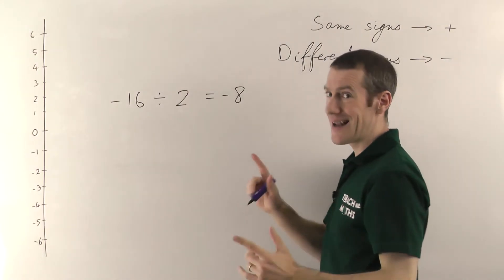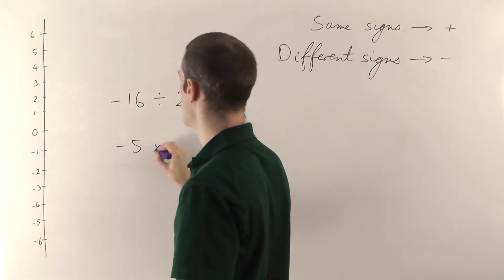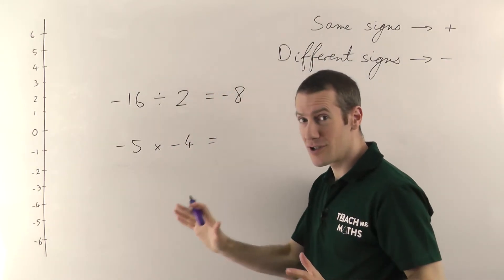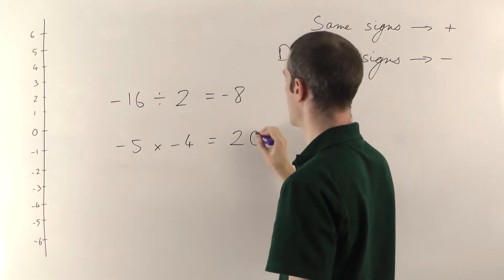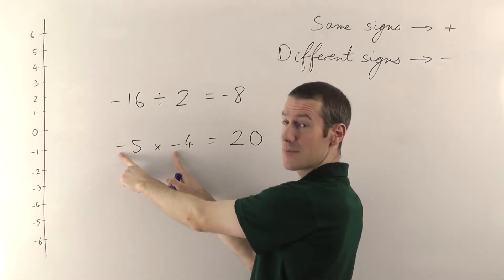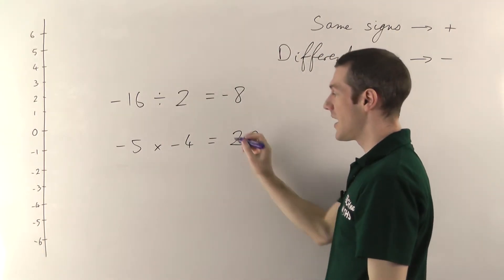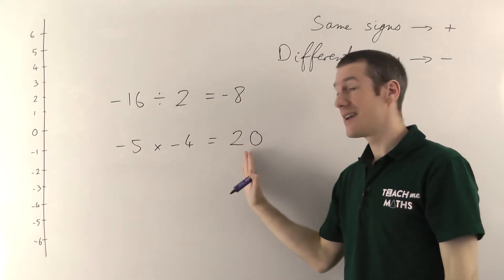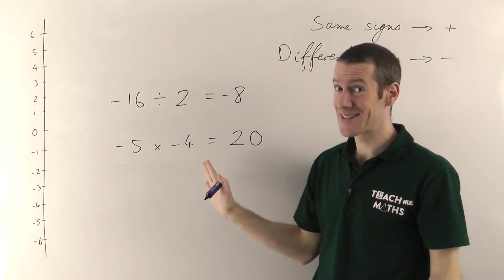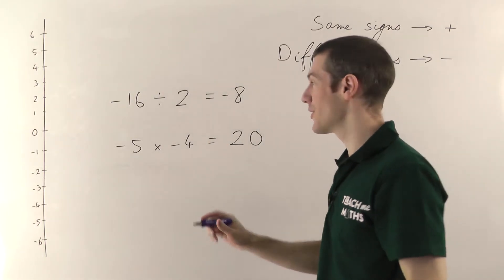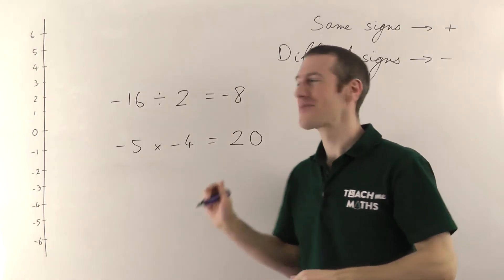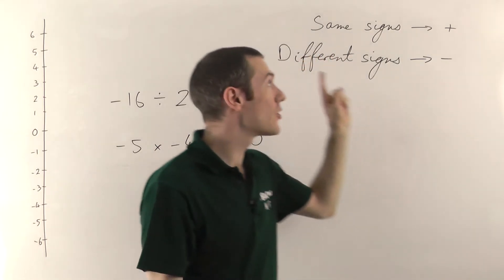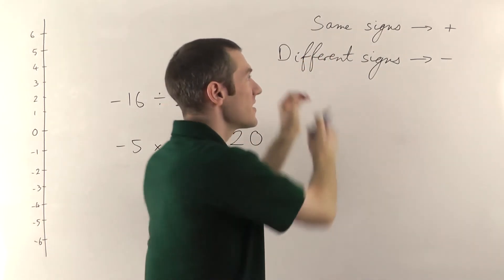One last example: minus 5 times minus 4. Ignore all the signs: 5 times 4 is 20. The signs are the same — both negative — so the answer is positive. Minus 5 times minus 4 is positive 20. So that's multiplying and dividing: as long as you can multiply and divide with normal numbers, doing it with negative numbers is easy as long as you remember the rule.